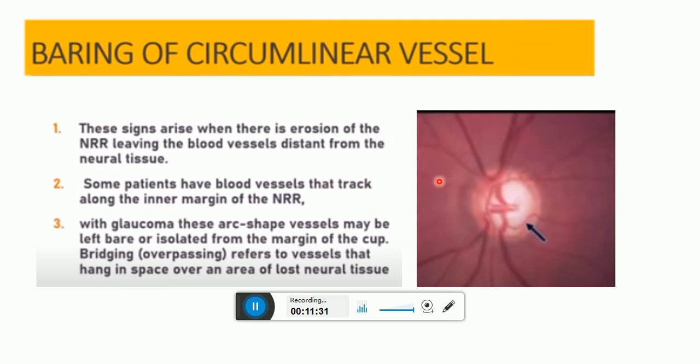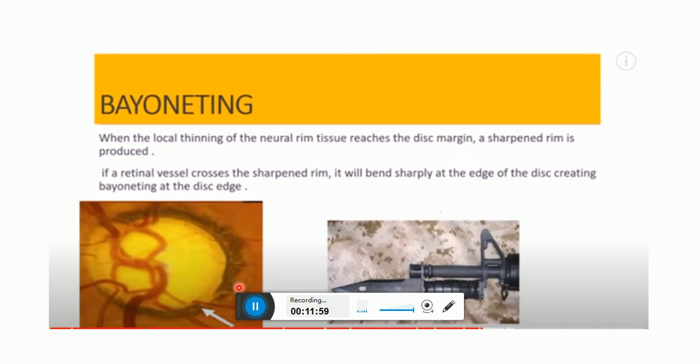Baring of circumlinear vessels. Baring of circumlinear blood vessel is a sign of early thinning of the neuroretinal rim. It is characterized by a space between the neuroretinal rim and a superficial blood vessel. This occurs when there is erosion of the neuroretinal rim which leaves the blood vessel distant from the neural tissue.